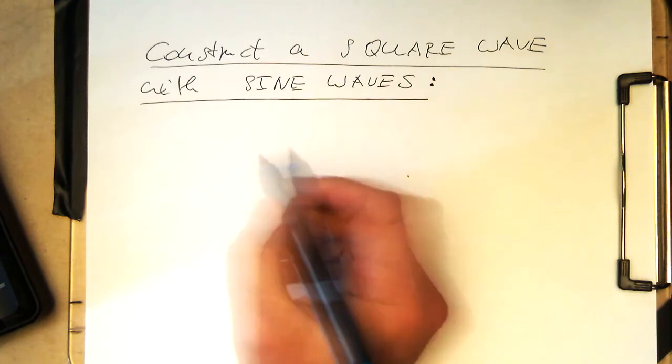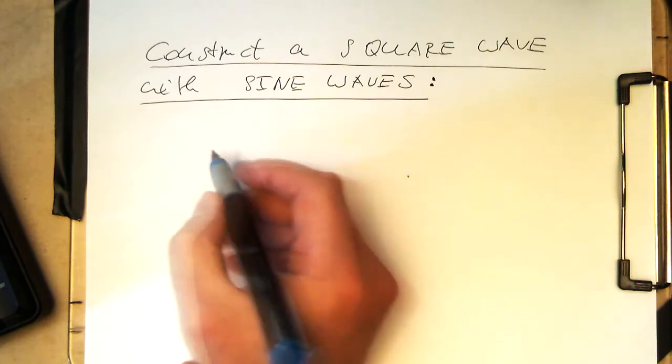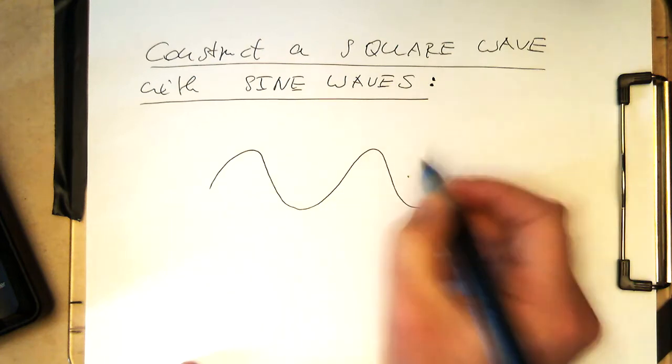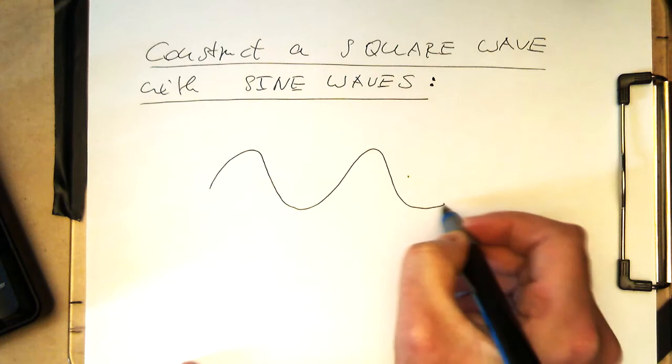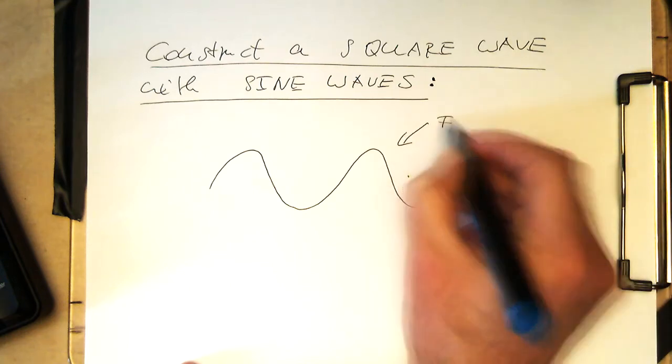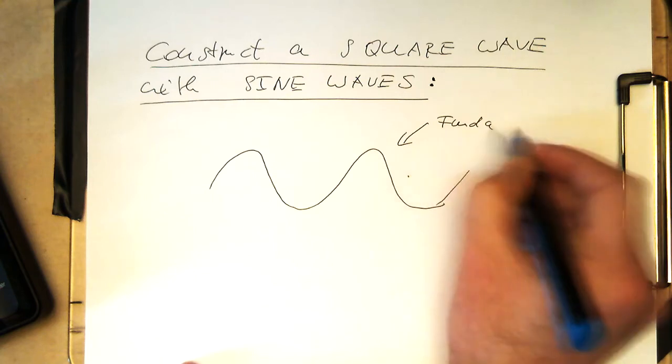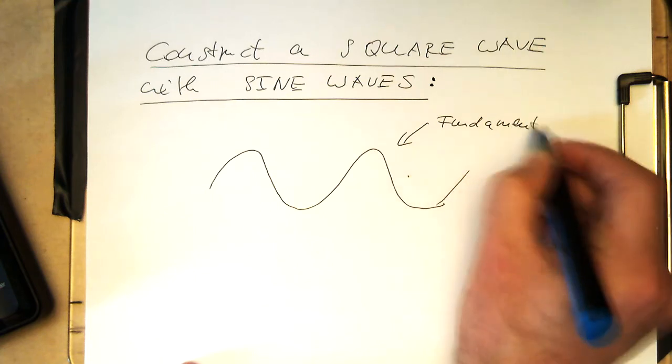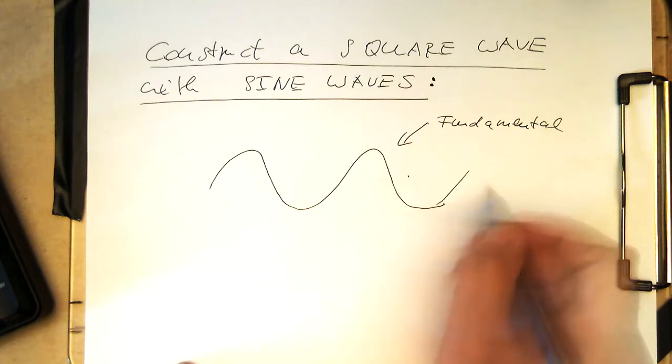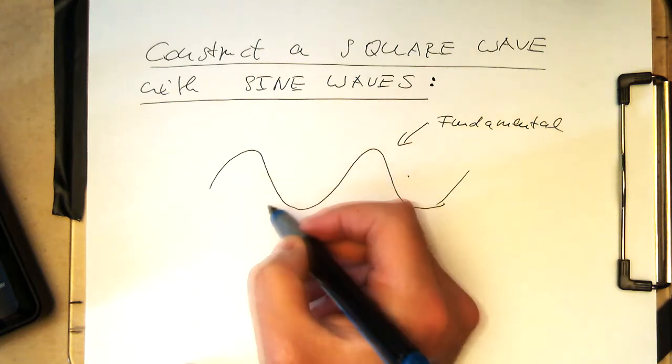So the idea is the following: if we have a sine wave like this, so that's our fundamental frequency here, and if you're now adding higher frequencies here, then this turns into a square wave.